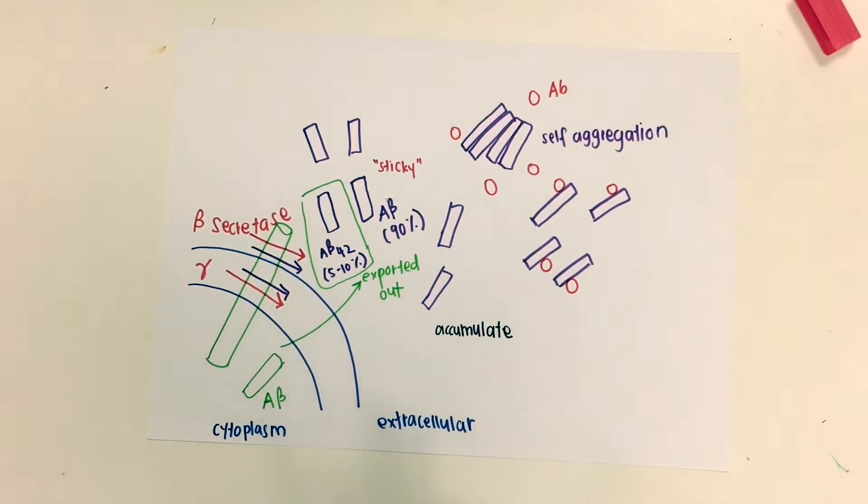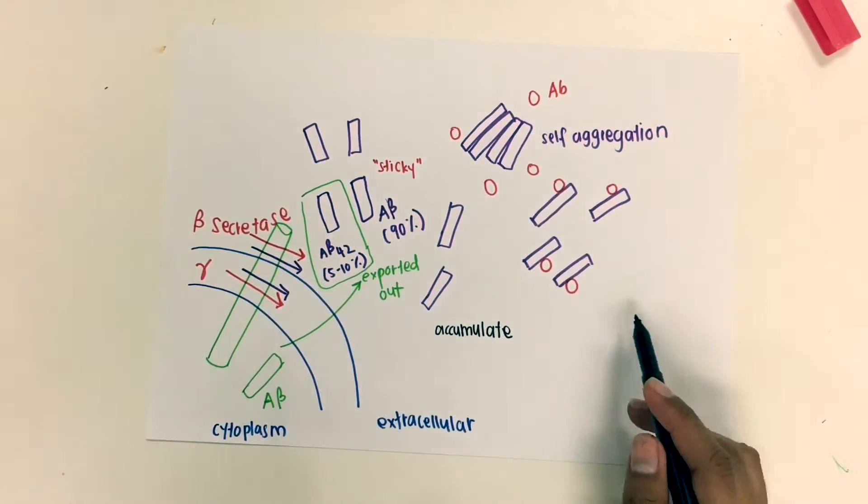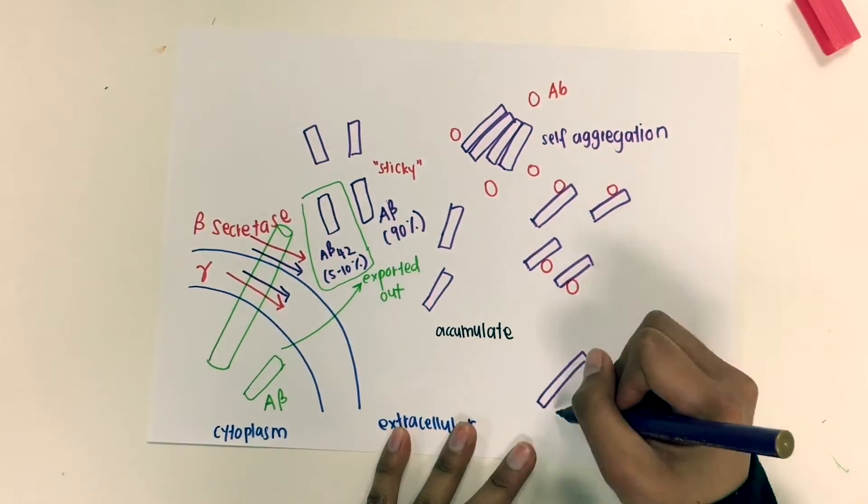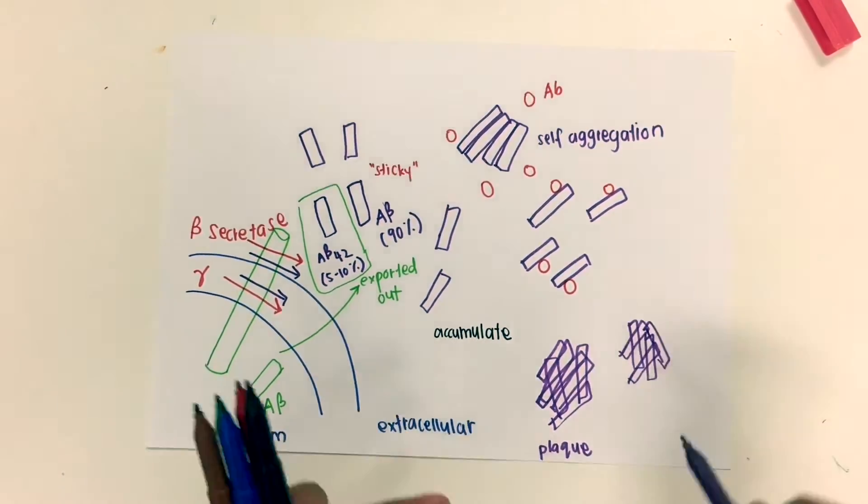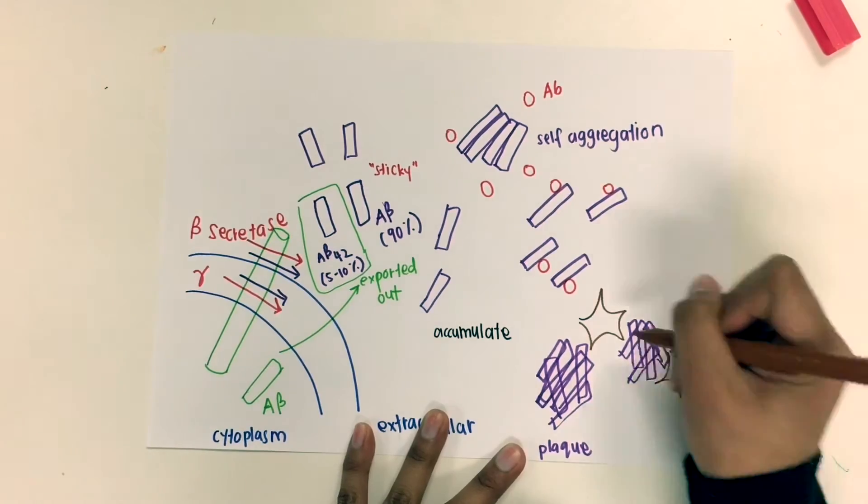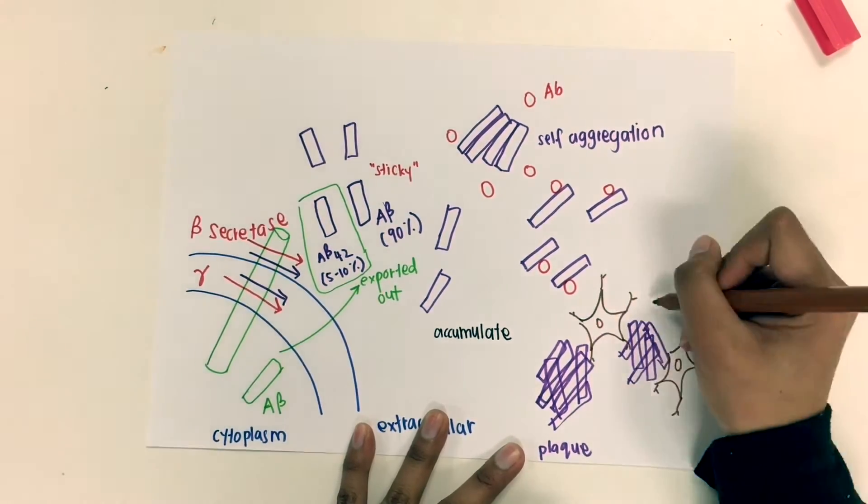The oligomers that cannot be cleared up are clumped together with more A-beta peptides, and they are joined by other proto-fibrils and fibers together with other proteins to form insoluble plaques. The insoluble plaques will get in between the neurons and prevent neuron interaction, and this is what causes Alzheimer's disease.